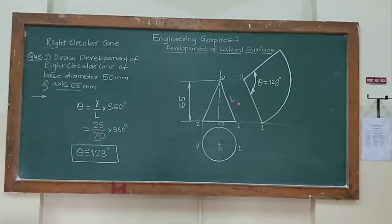Whereas this L indicates a generator length for this cone which we required for calculating theta. So this is theta. Theta is the angle made by this cone to find out its development of cone.